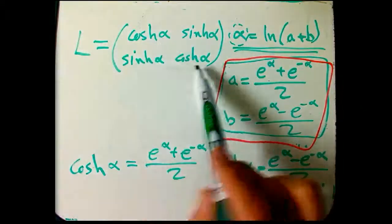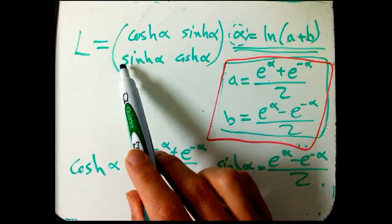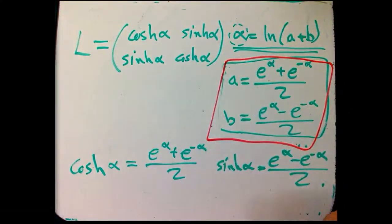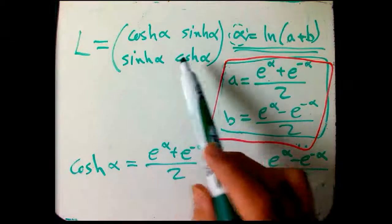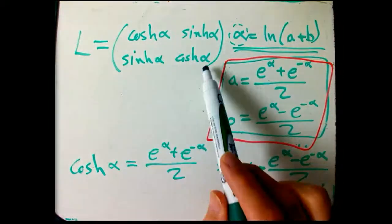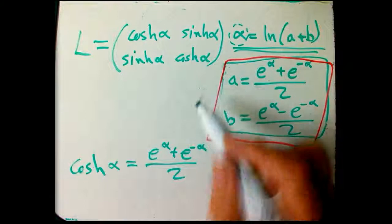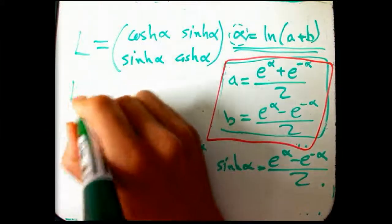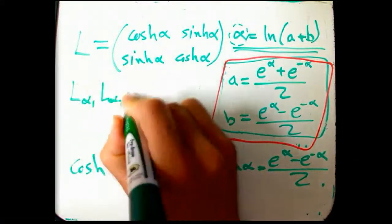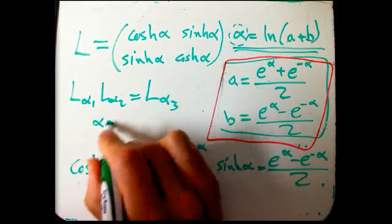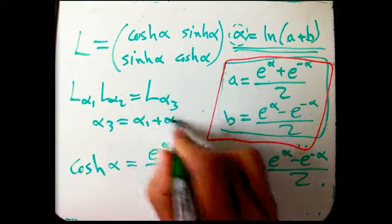It's cosh, sinh, sinh, cosh. Note, there's no minus sign, because these always are equal, no change in sign like there is in the Euclidean case. And this guy is automatically engineered to both be a legal Lorentz transformation, and so that L alpha 1, L alpha 2 is guaranteed to be L alpha 3, where alpha 3 is alpha 1 plus alpha 2.